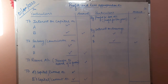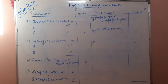On the debit side, 'To Interest on Capital' is recorded for partners A and B. Then 'To Salary and Commission' — if a partner is allowed a salary or commission, that is recorded here. Then 'To Reserve' — if the question specifies that a portion of net profit is to be transferred to a reserve, it will be recorded on the debit side as 'Transfer to Reserve, if specified in question.'